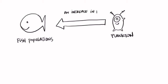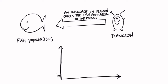Next, I need to write a short description about this relationship. To do this, I'll complete the sentence frame: an increase in blank causes blank to increase, decrease, or vary. In this case, I think that an increase in plankton probably causes my fish population to increase because they have more food available. So that's what I'll write. Or if it's easier, I could also draw a graph that shows a relationship like this.